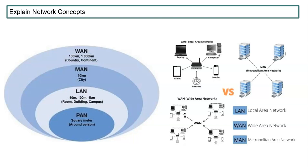PAN is a Personal Area Network — your laptop, tablet, and a few Bluetooth devices connected within a square meter around a person. LAN is a Local Area Network, usually within buildings — you can think of a school building at around 10 meters to 1 kilometer radius. The picture on the right side gives an idea of how a local area network is connected.